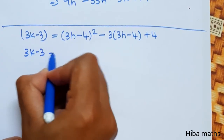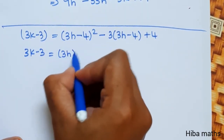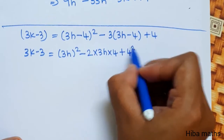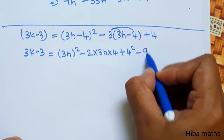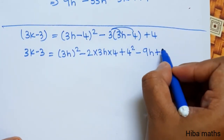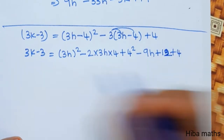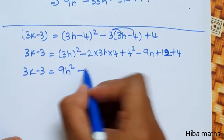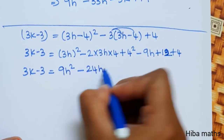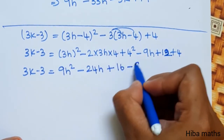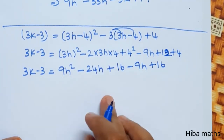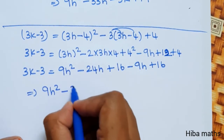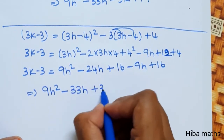Expanding using (a - b)² = a² - 2ab + b²: (3H - 4)² = 9H² - 24H + 16. Then -3(3H - 4) = -9H + 12. So 3K - 3 = 9H² - 24H + 16 - 9H + 12 + 4, which simplifies to 3K - 3 = 9H² - 33H + 32.